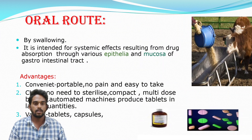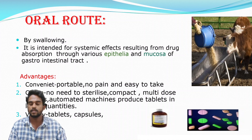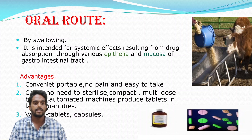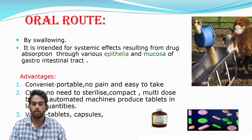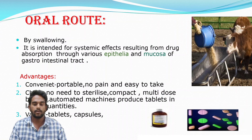Another method is the oral route, where drugs are directly administered through the digestive tract by swallowing. It is intended for systematic effect resulting from drug absorption through various epithelia and mucosa of the gastrointestinal tract. Advantages include being convenient, portable, painless — as it is administered through the digestive tract — and easy to take, as pills and tablets are available.